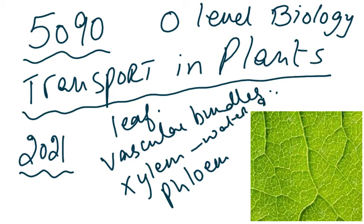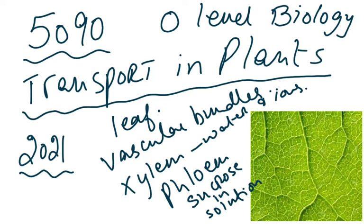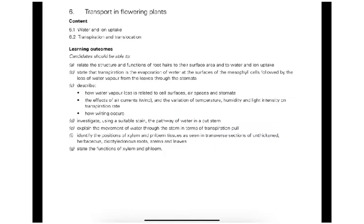Xylem is going to transport water and ions, and phloem is going to transport food — but please do not write 'food'. Food won't be correct biological English. It's going to transport sucrose, and the sucrose is going to be in solution. We start first looking at the syllabus and then go on to the details of this chapter.